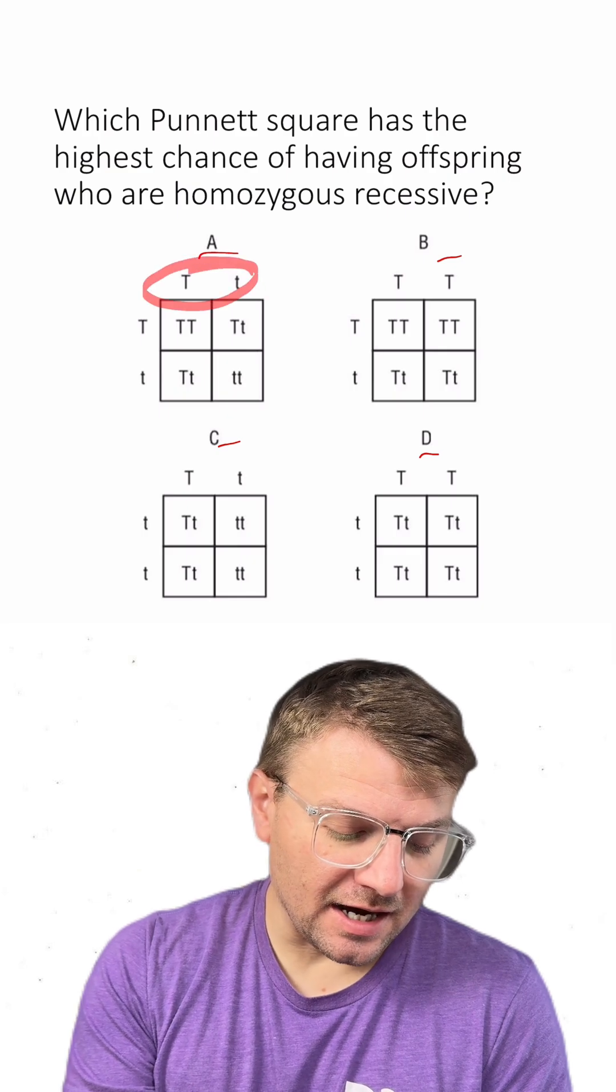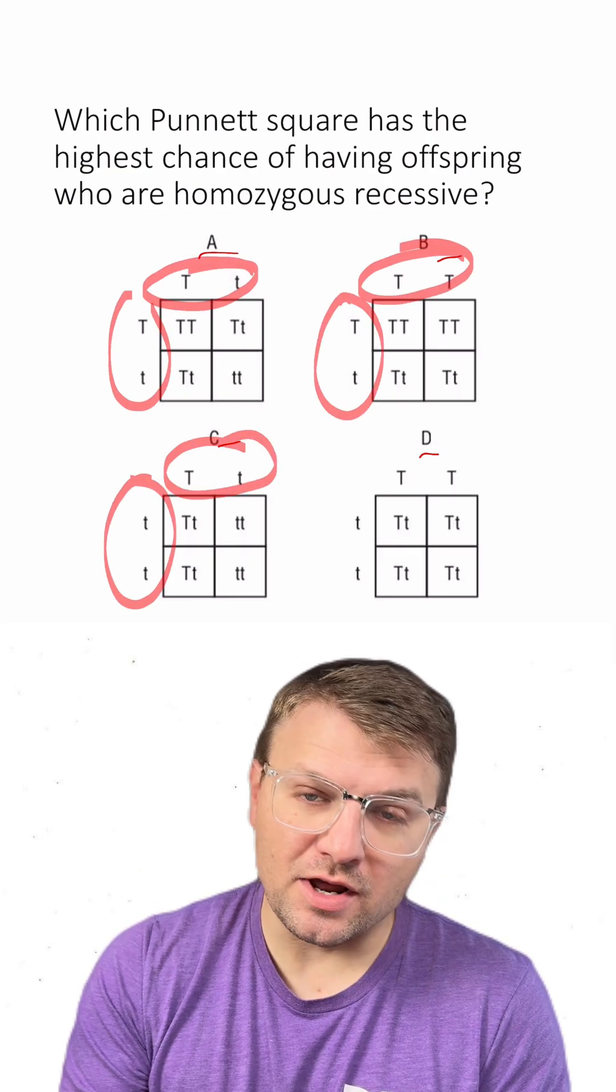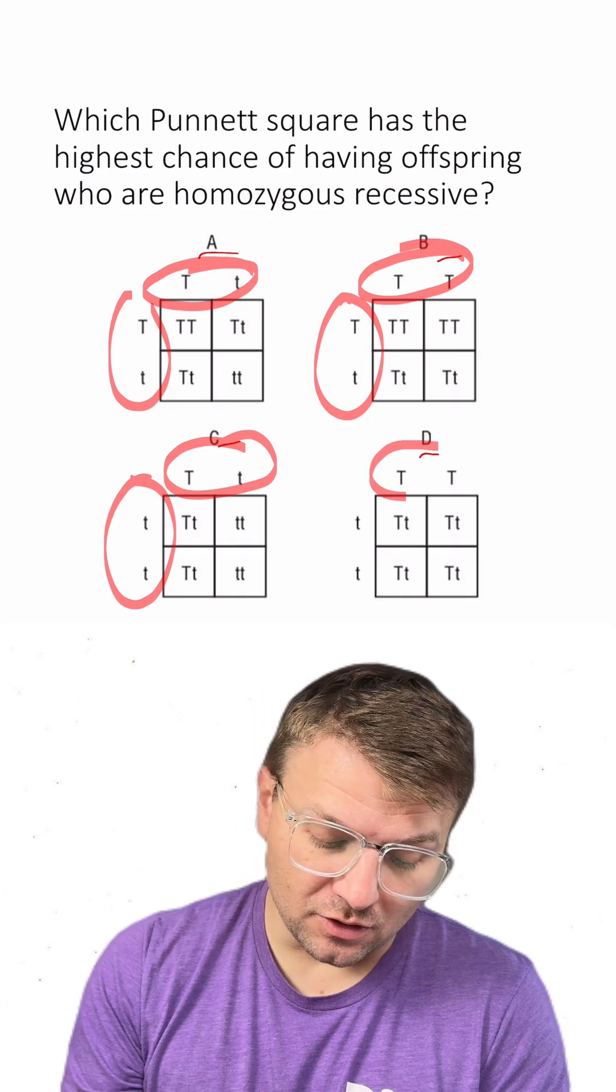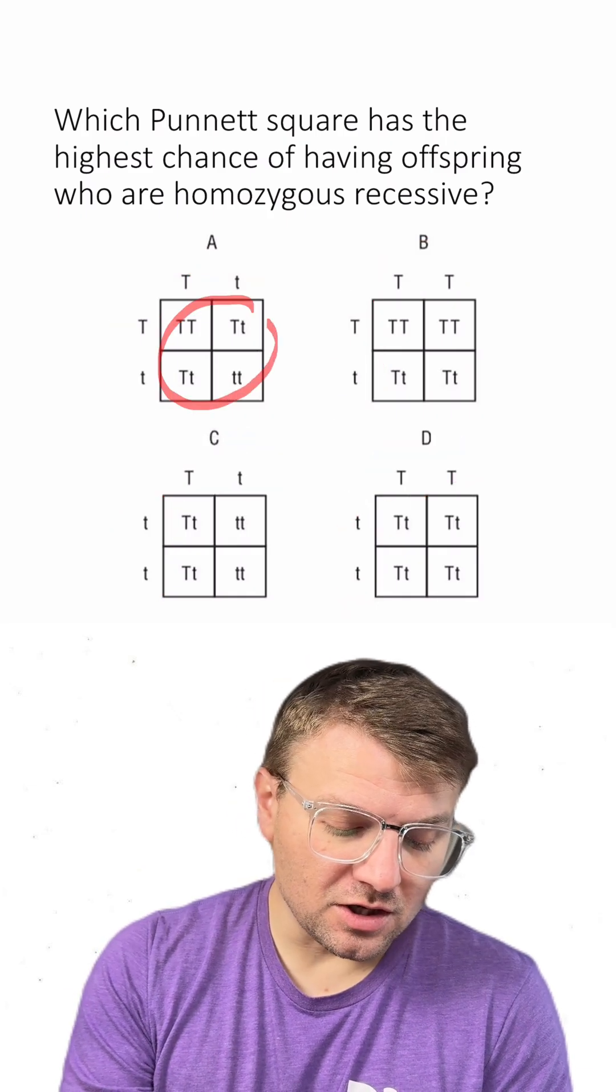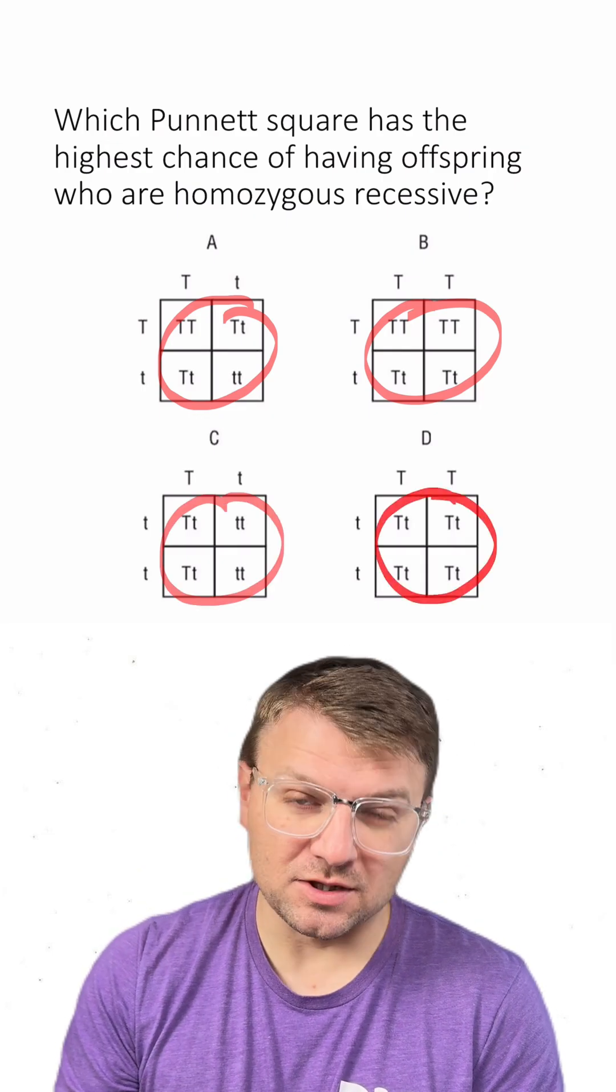Remember that the outside of every Punnett square are the parents, and the parents donate one of their two alleles to the offspring. All of the genotypes on the inside are possible genotypes of the offspring.